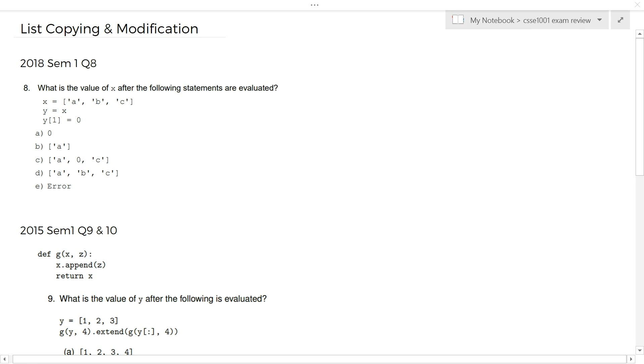Hello everyone, to this episode of CSSE 1001 exam review, we'll be covering list copying and modification. You guys might not have seen it during the course with your assignments, however it's a key fundamental theory you guys need to understand, especially for the exam. There's always one or two questions discriminating between the sixes and the sevens. So make sure you guys have a good practice, understand it, and we'll get started.